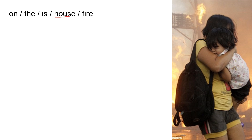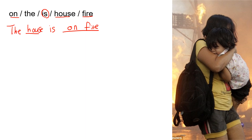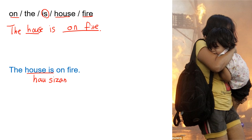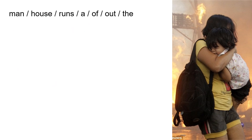House is a noun and fire is a noun too. Either one can be a subject, and then the verb is 'is.' Something is something — but we have 'on fire,' a phrase — so the structure is 'something is on fire.' The subject is 'house.' The house is on fire. The house is on fire.